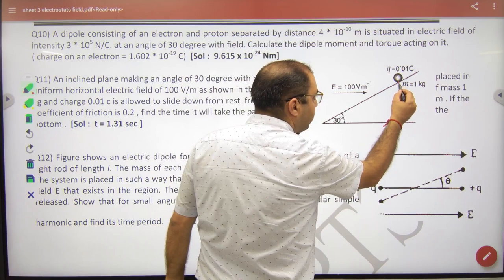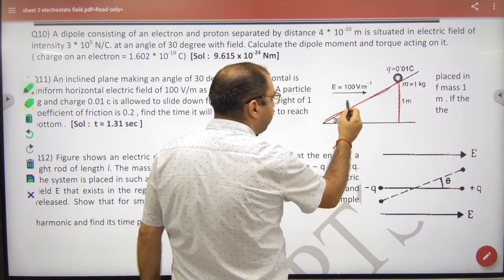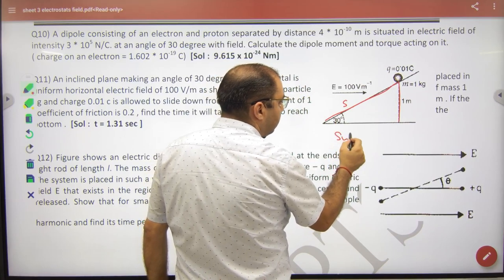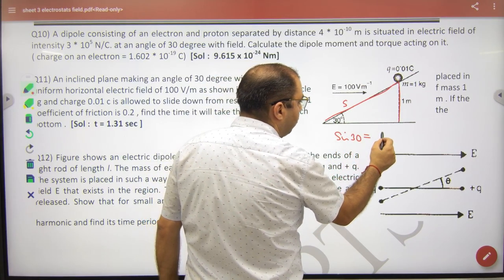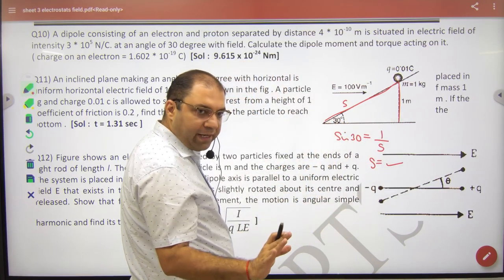If this distance is 1, this is 30 degrees, then you can remove this distance. How? Sine of 30 is equal to 1 divided by s. So what will go from here? s. First thing.